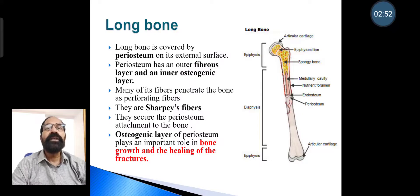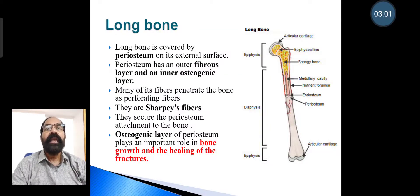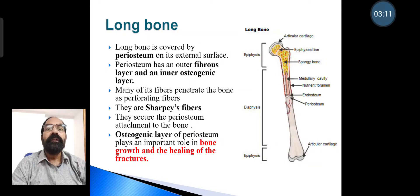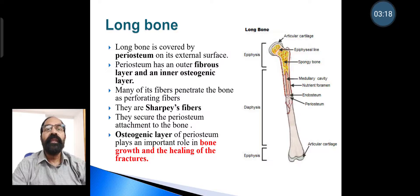The periosteum has an outer fibrous layer and an inner osteogenic layer. Many of its fibers penetrate the bone as perforating fibers, called Sharpey's fibers, which secure the periosteum attachment to the bone. The osteogenic layer of the periosteum plays an important role in bone growth and the healing of fractures.